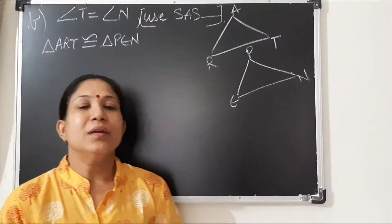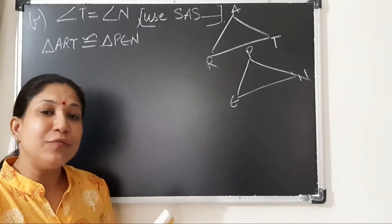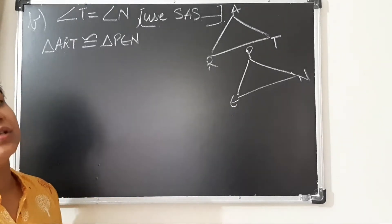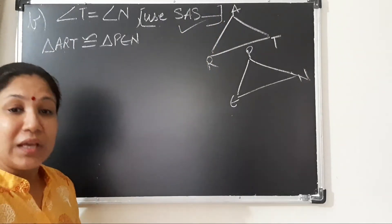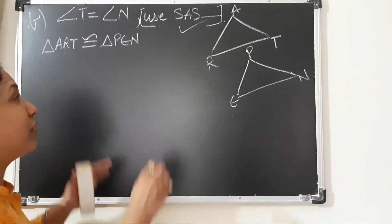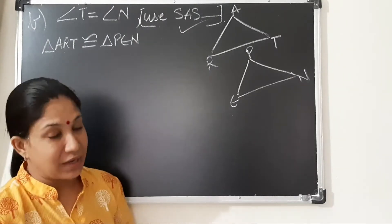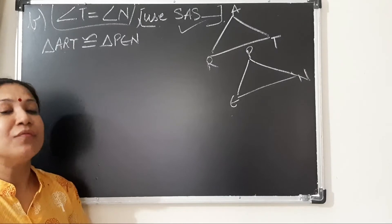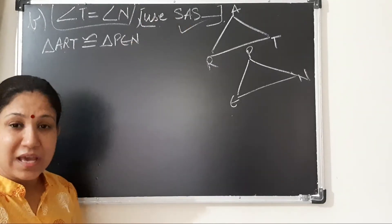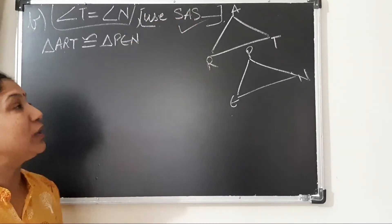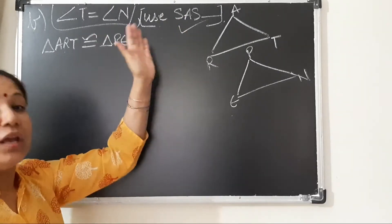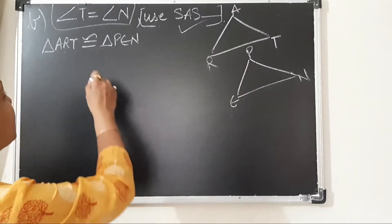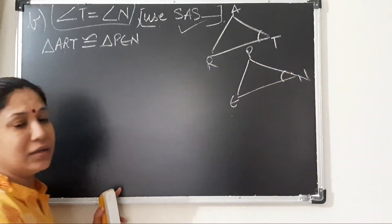Now part B of the second question says you have to prove the same two triangles — triangle ART congruent to triangle PEN — but this time using the SAS congruence rule instead of SSS. They are saying prove the triangles congruent by using the side-angle-side congruence criteria. One more piece of information is given: angle T is equal to angle N.